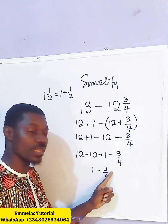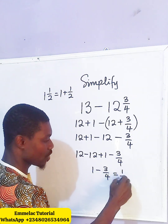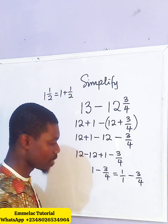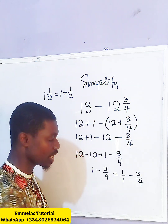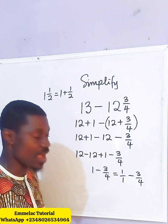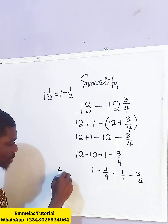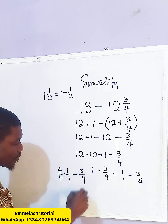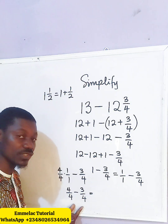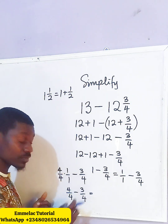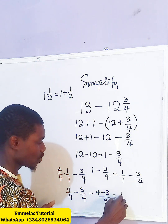Here we have a whole number 1, and here we have a fraction. Our 1 can be written as 1 over 1, then minus 3 over 4. We have 1 as a denominator here and 4 as a denominator there. To get 4 as the common denominator, we multiply both numerator and denominator by 4, giving us 4 over 4 minus 3 over 4. Now that we have the same denominator, we subtract the numerators: 4 minus 3 over 4, which gives us 1 over 4.